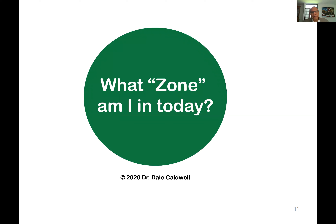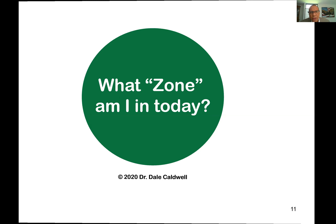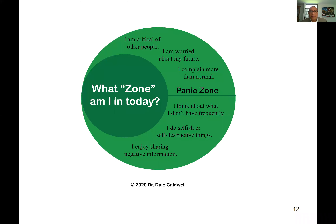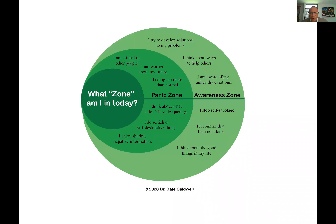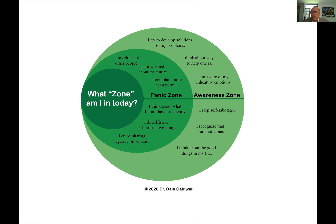We're in a difficult time with the pandemic and issues of racism, and I encourage everyone to check what zone they're in. I created a self-reflection map to help with that. The first zone is the panic zone — people are worried about their future, on edge, critical of others, and enjoy sharing negative information. The goal is to move into the awareness zone, where people recognize unhealthy emotions, know they're not alone, try to develop solutions, and work to stop self-sabotage.